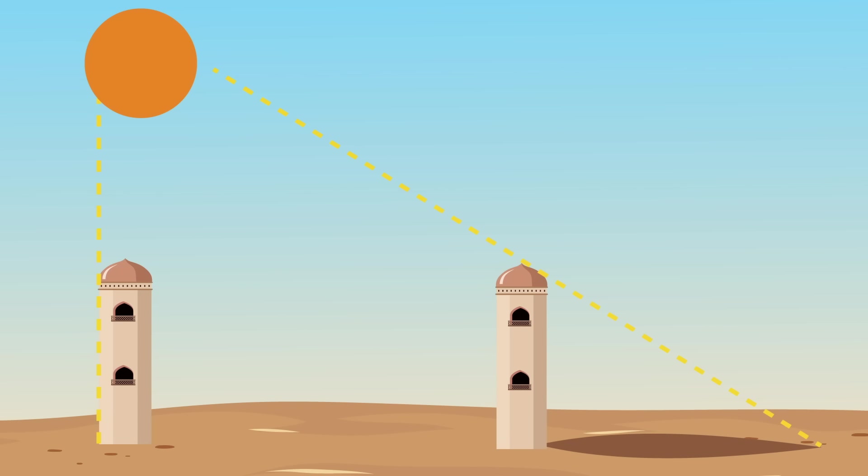We're going to use the same numbers Eratosthenes found, which anyone can find themselves, at least during the next summer solstice. But we'll assume for now the Earth is flat and the Sun is close-ish. So here's Syene, which the Sun is directly overhead, casting no shadows. And here's Alexandria, 800 kilometers away, where shadows cast at an angle of 7.2 degrees from the vertical. And we can use this information to find how far the Sun is in this model.